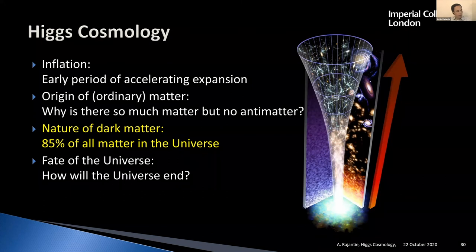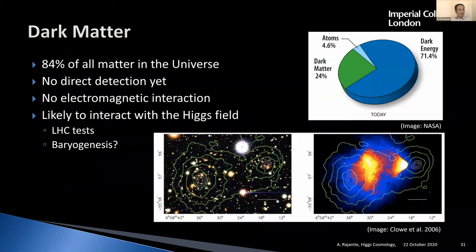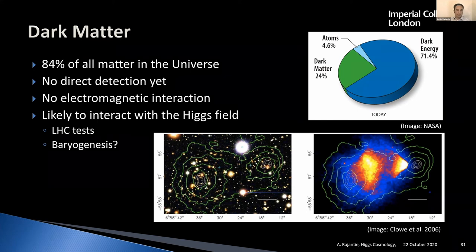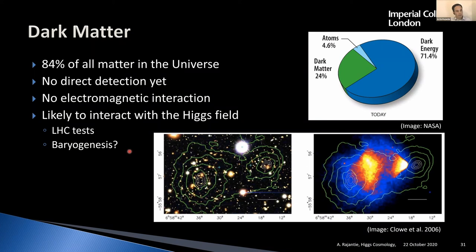The third topic is dark matter. From astronomical observations, it seems that only a very small part of the matter in the universe is visible matter made of atoms. About 84 or 85% of all matter in the universe is something else — not made of atoms and not visible. There's lots of astronomical evidence for this in many different forms.